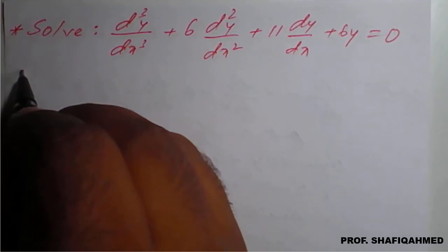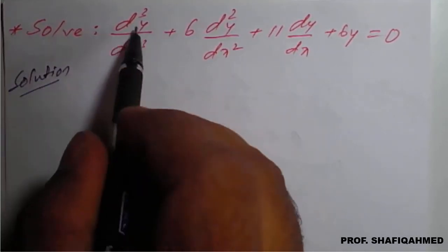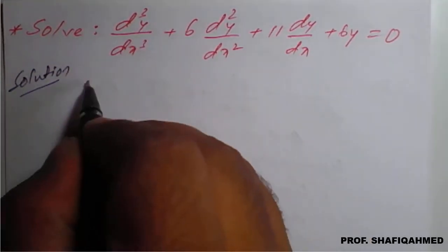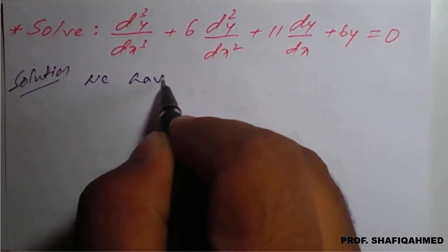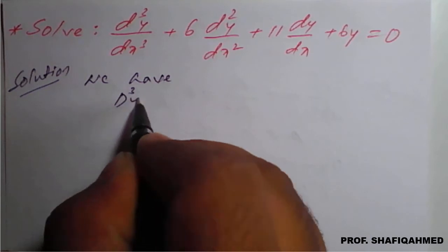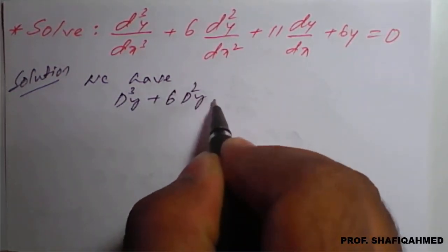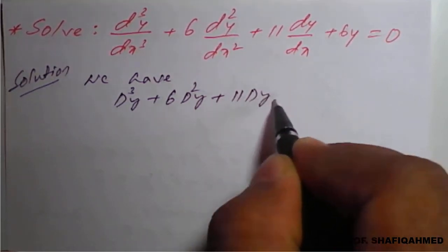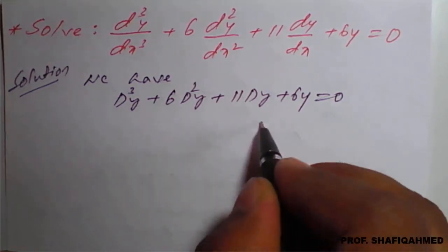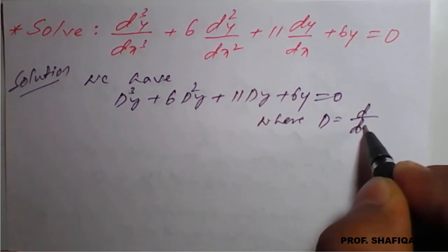Solution. The given differential equation, I will write symbolically as d³y plus 6d²y plus 11dy plus 6y equal to 0, where capital D stands for d/dx.